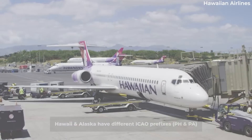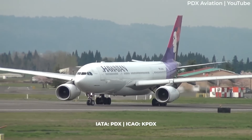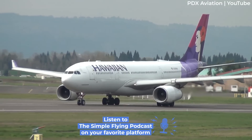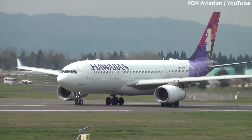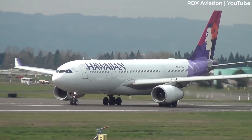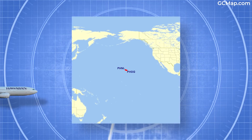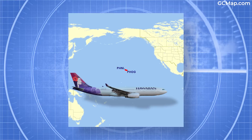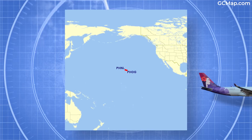Unlike the continental United States, which simply adds the K prefix to the IATA airport code, each country, state, or region using the P prefix is assigned a second letter. For example, Hawaii is assigned H, and so all ICAO codes within the state of Hawaii begin with PH. Honolulu's IATA code is HNL and Kahului's is OGG, so their equivalent ICAO codes are PHNL and PHOG, respectively.